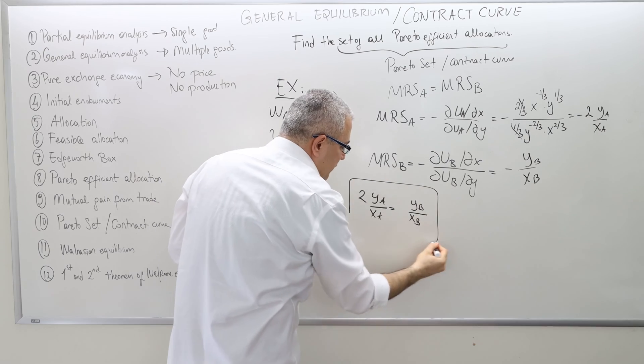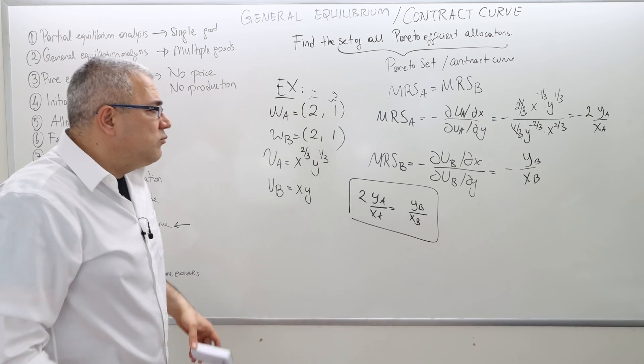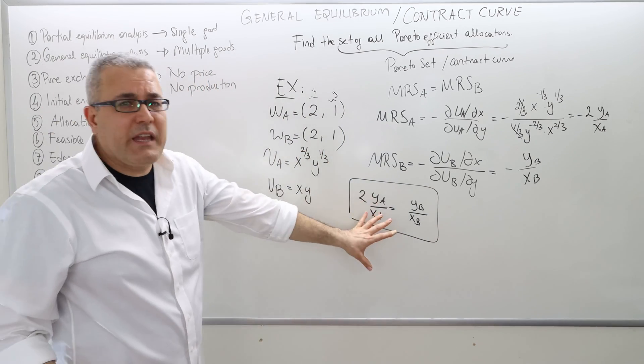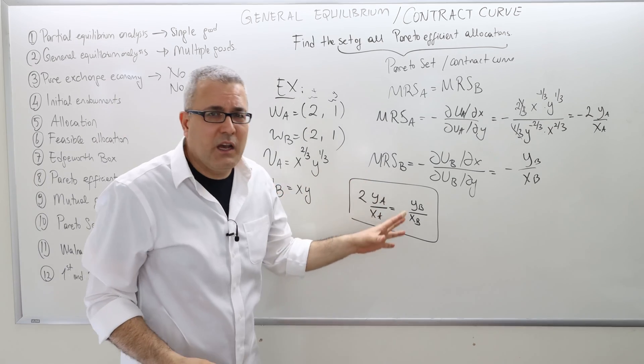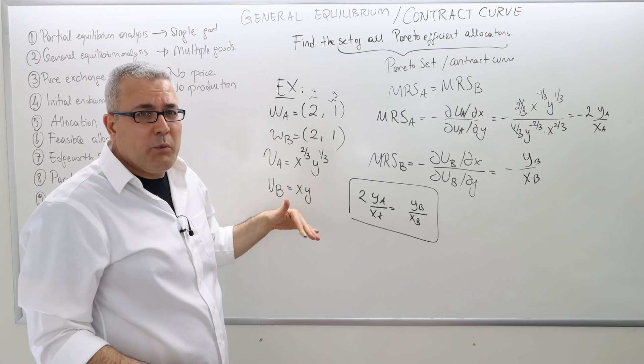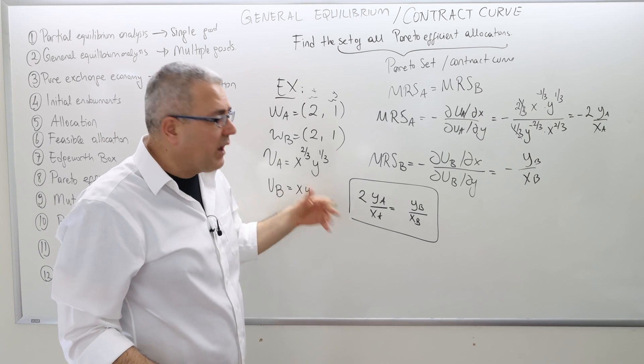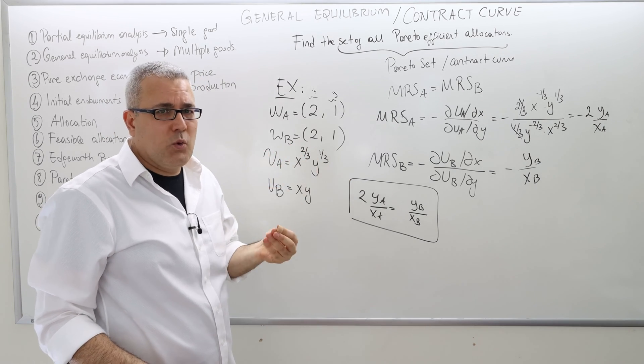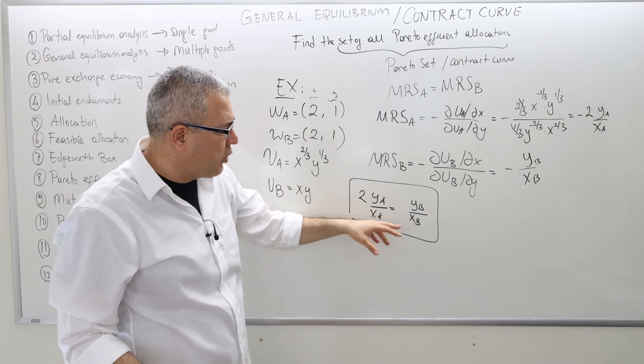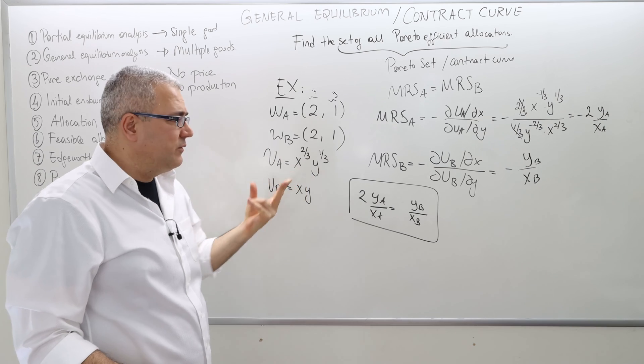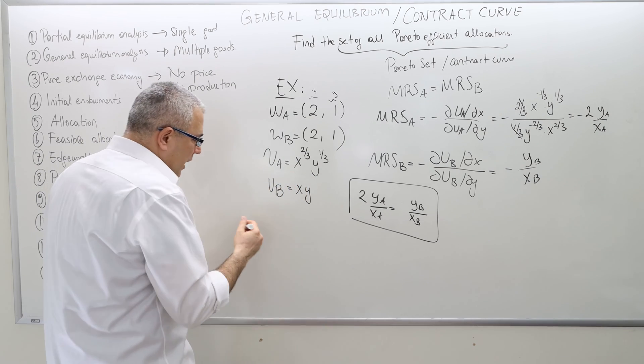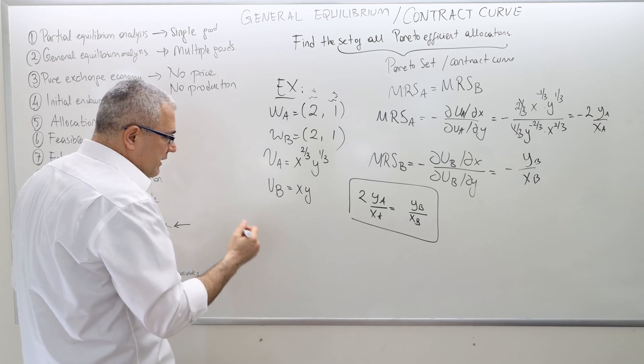Once again, you can leave it as is, but it would be nice to write the entire contract curve if you want to draw it as a function of one agent's good x and good y. The number of unknowns is 4. It's nice to reduce it down to 2. How do we do that? By using the feasibility constraint.